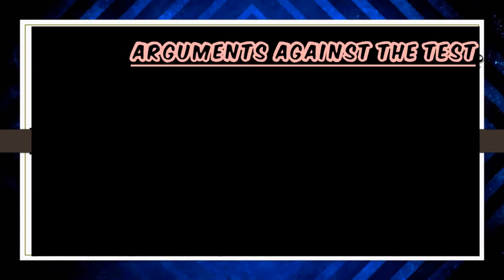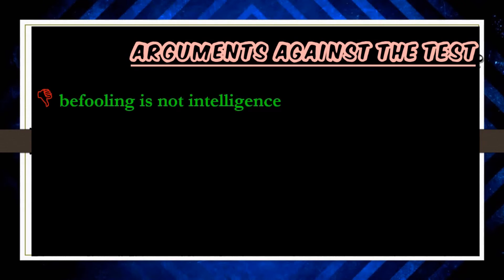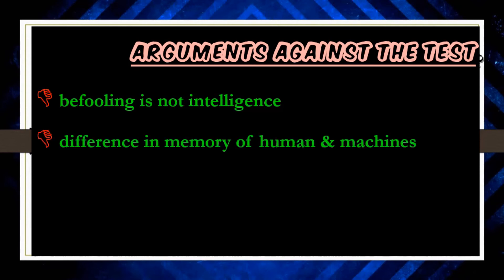There are many arguments against this test. Fooling somebody is not the same as intelligence — when we think about intelligence, we expect a positive outcome from an intelligent being, but here we are simply verifying whether the machine can fool the interrogator into believing it is human. Another point of criticism concerns computers themselves: computers generally have more storage space than human beings and can hold huge volumes of data compared to a human being.